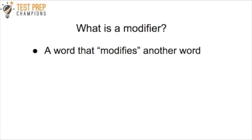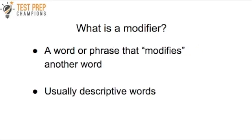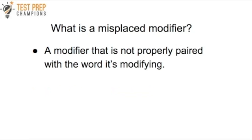What is a modifier? A modifier is a word that modifies another word. It can change, add emphasis, or add further explanation to a word, and therefore it can change the entire meaning of a sentence. A modifier doesn't just have to be a word — it can also be a phrase. But it's commonly going to be a descriptive word such as an adjective. A misplaced modifier is just a modifier that's not properly paired with the word it's modifying.